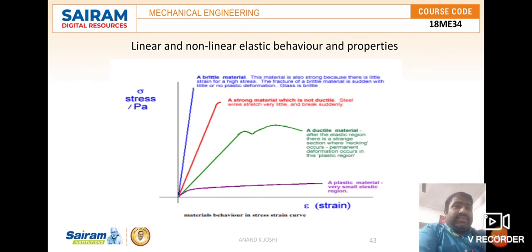Certain plastic materials have a very small elastic region, take very less load, and then fracture. This is how materials behave at various stress and strain levels.